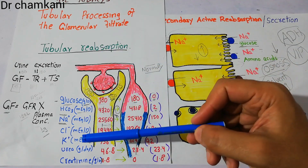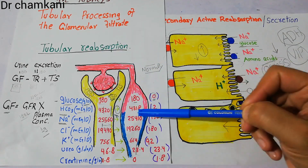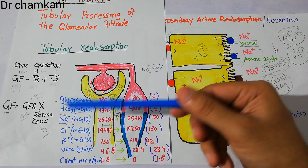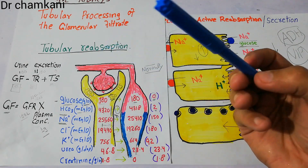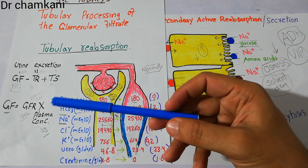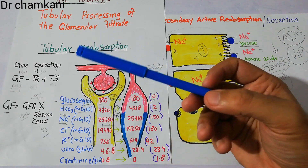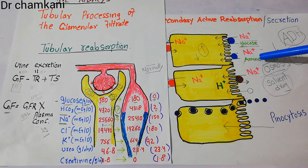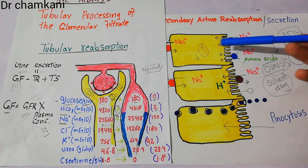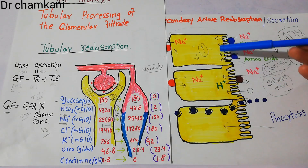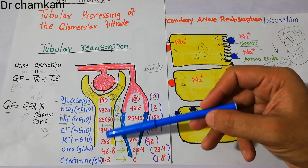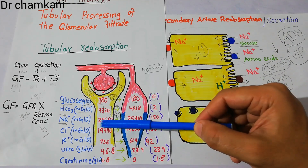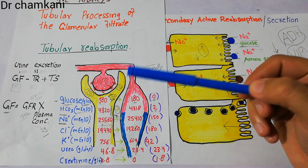Let's discuss how chloride, urea and creatinine try to get out of the proximal tubule into the peritubular capillaries. In previous lectures we discussed that some electrolytes like sodium are absorbed actively, and some substances like glucose and amino acids are dependent on sodium reabsorption — they share a ride with sodium to get entry into the cells of the proximal tubule. The absorption of chloride from the proximal tubule into the peritubular capillaries can occur in three ways.